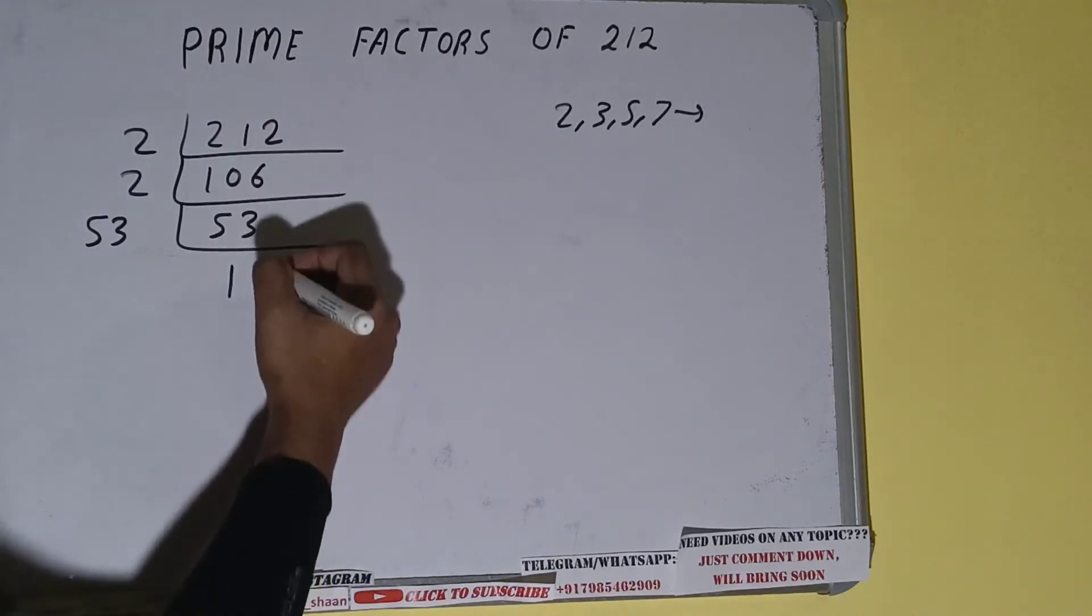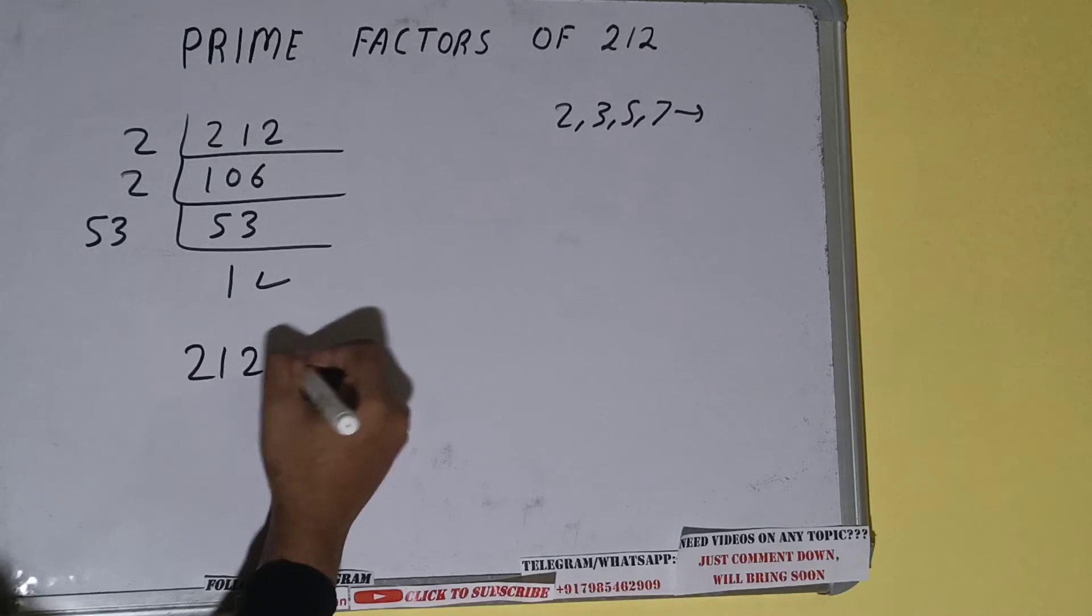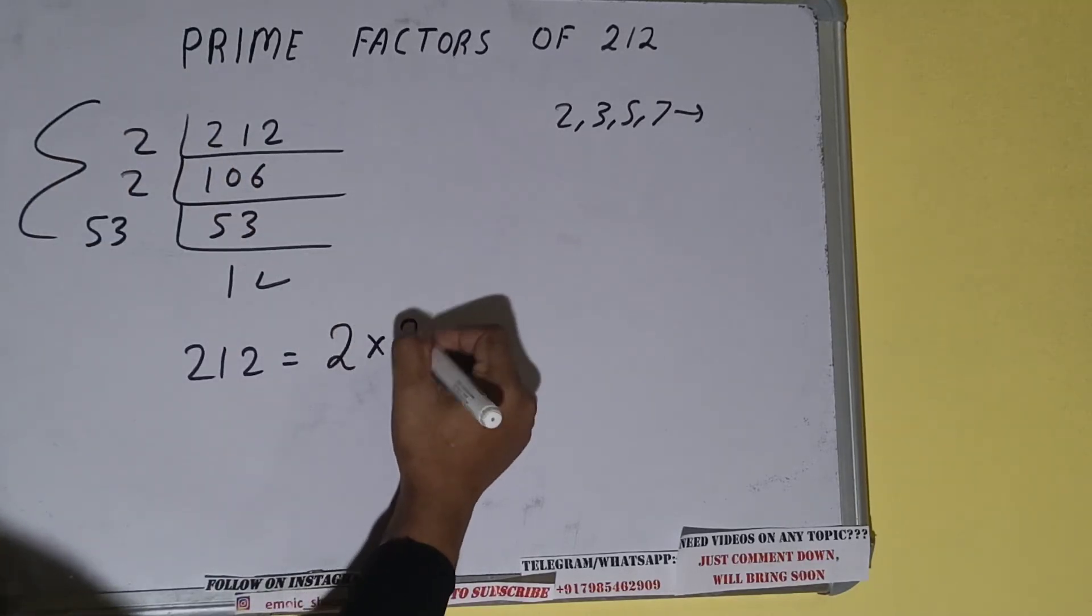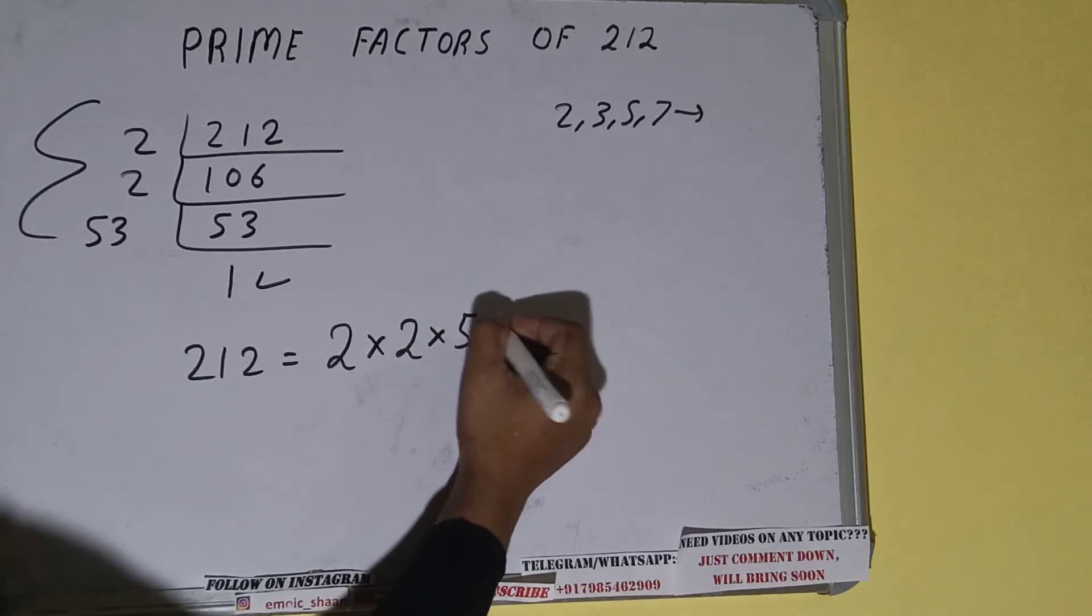Once we get 1, we need to stop and do one last thing. That is, prime factors of 212 will be whatever we have on the left hand side, that is 2 times 2 times 53. That would be the answer.